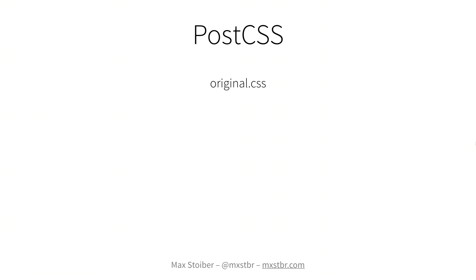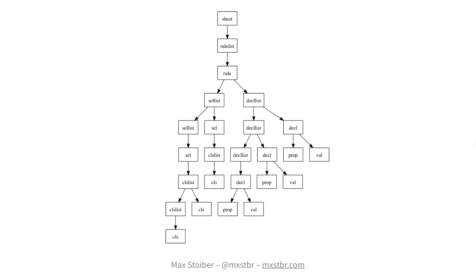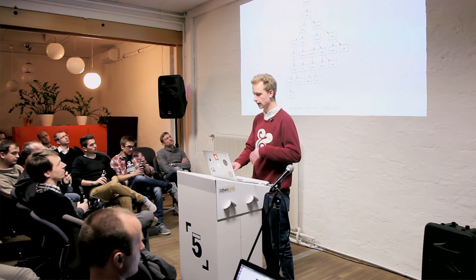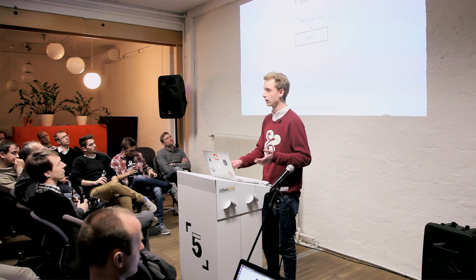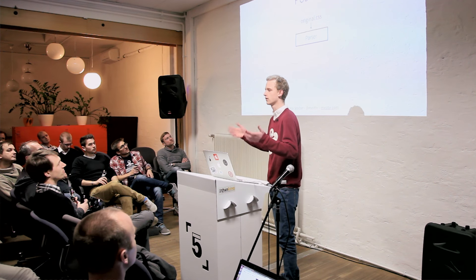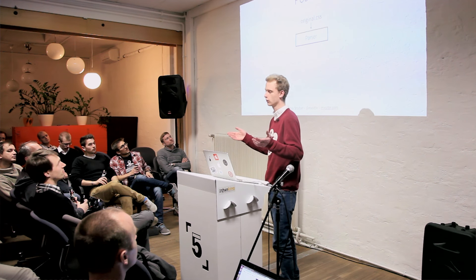Basically, it works this way. You've got your CSS file that you wrote. You pass that to PostCSS, which parses your CSS file and turns it into an abstract syntax tree. So you've got your sheet and your rule, a declaration list, and declarations with properties and values. PostCSS turns it into a JSON AST — abstract syntax tree.